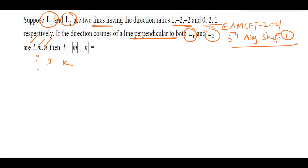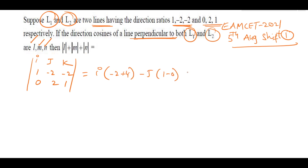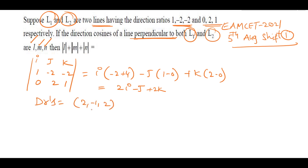Using the determinant method with i, j, k: | i  j  k | | 1 −2 −2 | | 0  2  1 |. This gives i(−2+4) − j(1−0) + k(2−0) = 2i − j + 2k. So direction ratios are (2, −1, 2).